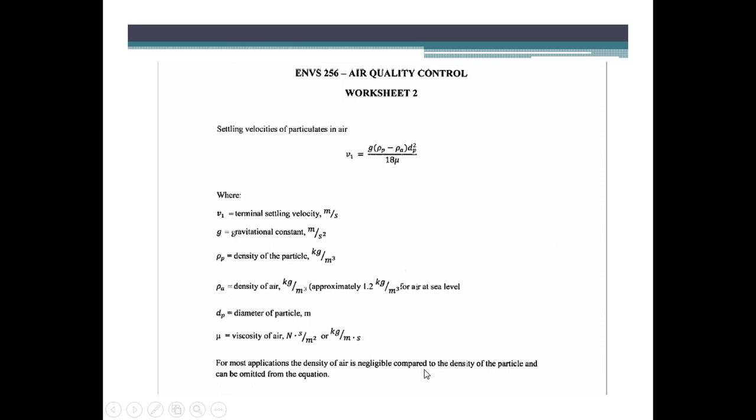This is very important to note at the bottom here. This little note, for most applications density of the air is negligible, that's this component of the equation. It is negligible compared to the density of the particle. So the density of the air compared to the density of the particle, the difference between them is negligible. And since they are so close, essentially what we're saying is this can be omitted from the equation. So you may observe that PP is often omitted from the equation.